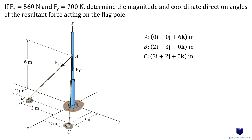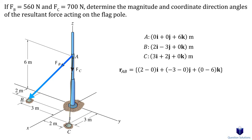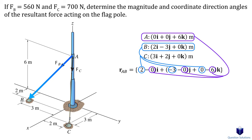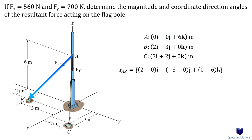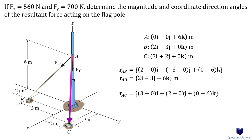The second step is to write the position vectors — a vector that starts from where the force starts and ends where the force ends. For force FB, notice how it starts at A and ends at point B. To find the position vector, we subtract the position of A from the position of B — subtracting each component of A from B. A tip: when we look at the way we write RAB, B is the last letter, so when we subtract, we write B first and A comes second. We do the same for force FC, which starts at A and ends at C, so we subtract the position of A from C.